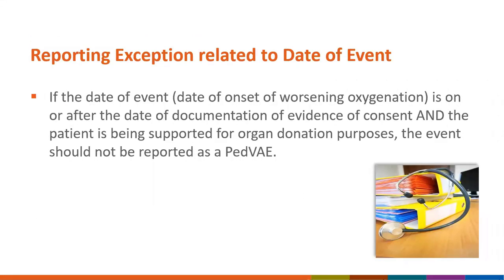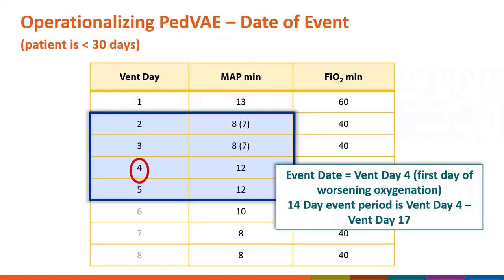There is a reporting exception related to the date of event: if the date of onset of worsening oxygenation is on or after the date of documentation of evidence of comfort measures or palliative care, you would not be required to report that event as an identified PVAE. Going back to our earlier example with a patient less than 30 days old, the date of event is vent day four, which is the first day of worsening oxygenation.